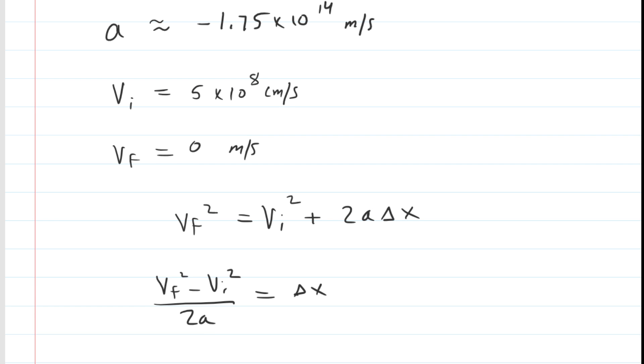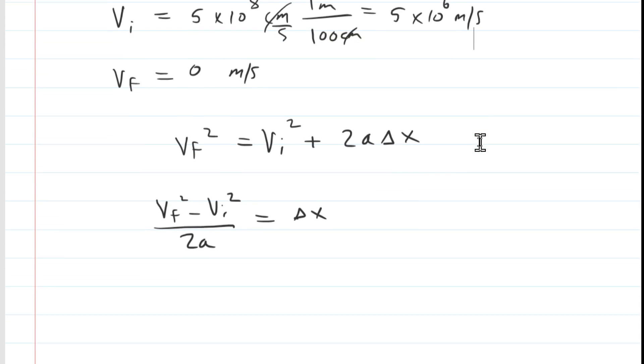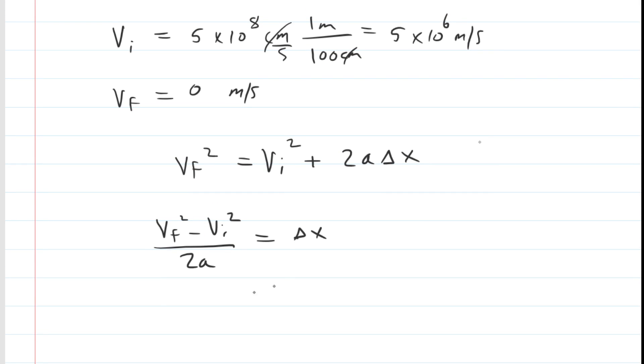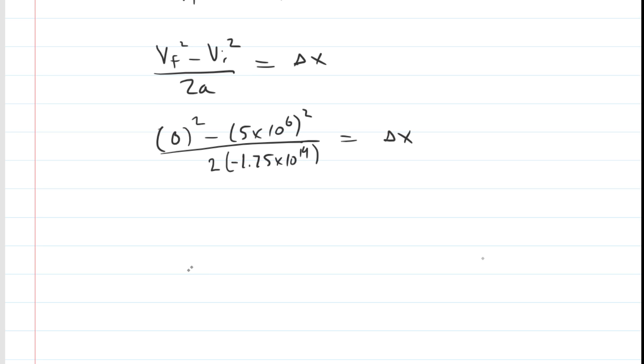Just be a little bit careful here because they're giving us the initial velocity in centimeters per second. We would want to do a unit conversion there. We all know that 100 centimeters is equivalent to 1 meter. So if we set that up, the centimeters cancel. We're going to get 5×10⁶ meters per second. So with that little conversion, we can go ahead and plug in the known values. And when we simplify that, we can see Δx is approximately 0.0714 meters. That is how far the electron will travel before coming to rest.